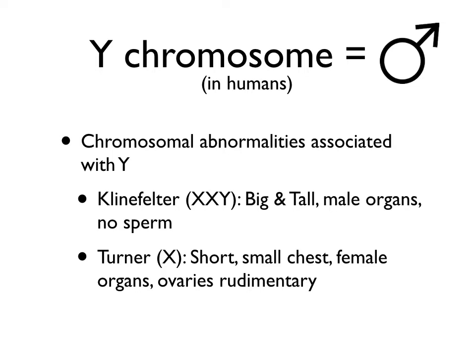Individuals with Turner syndrome have an X only — they did not receive a sex-determining chromosome from their father. They do not have male genitalia, but they're not exactly normal biological females either. They tend to be somewhat shorter with smaller chests, and have only rudimentary ovaries.